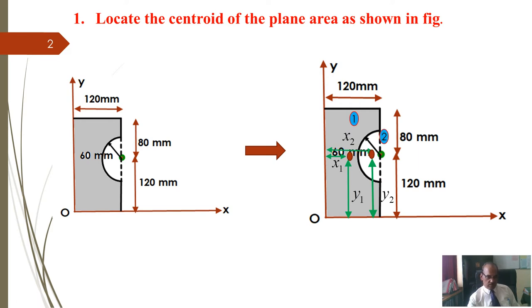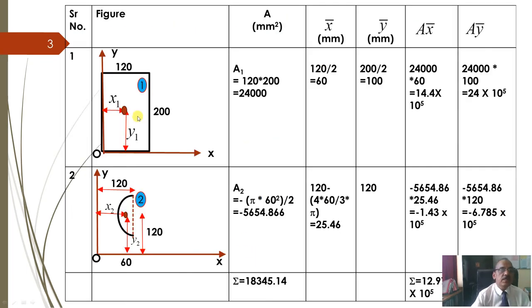Radius of the circle is given 60 and center, coordinates of the center, y coordinate is given. See, y coordinate of center is 120 and x coordinate is also 120, see this is also 120, the center, coordinates of center is given in the problem. So first let us take a rectangle, for rectangle I think you don't have any problem, rectangle you can write down area 120 by 200. So 24000 is the area and x coordinate will be 120 by 2 that is 60, y coordinate will be 200 by 2 that is 100, you can write down a1 x1 here and then a1 y1 here.